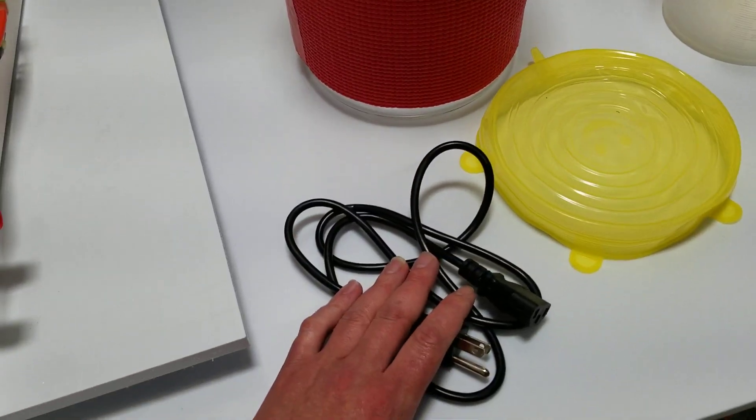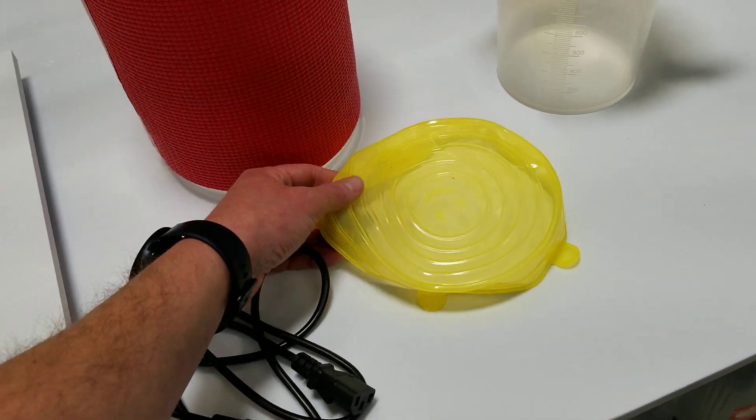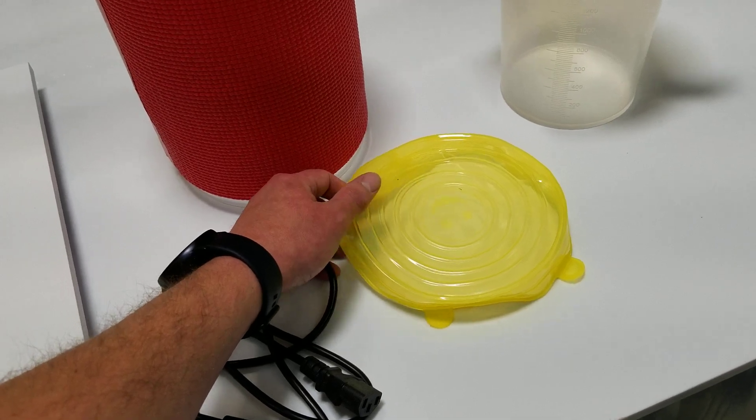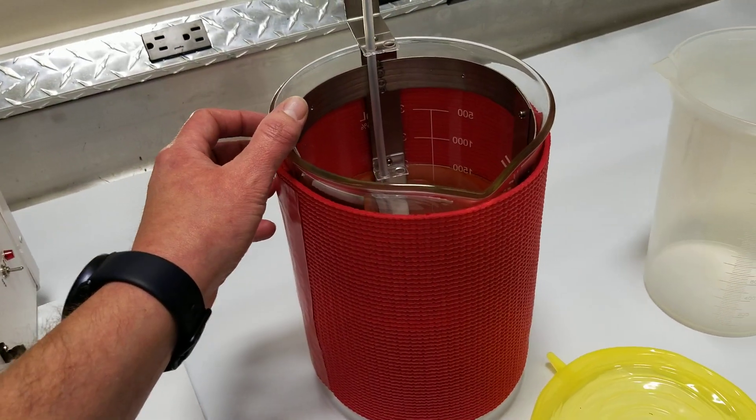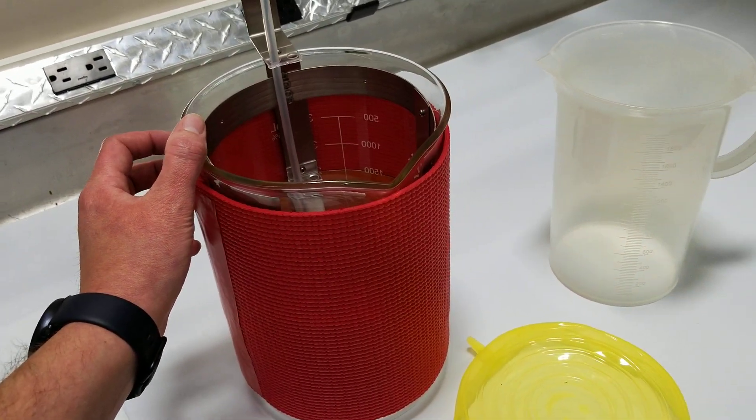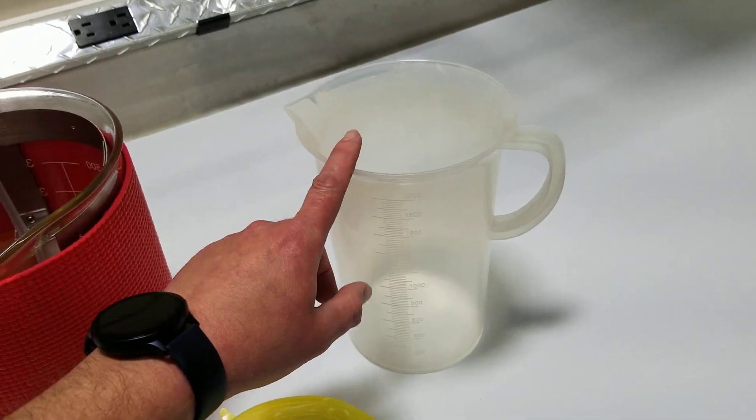We have a power cable and a cap for when you're finished for the day, so you can cover up your beaker and not get any debris or evaporation, and finally a rinse beaker.